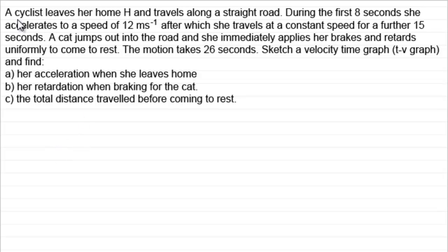What we've got here is a cyclist leaves her home H and travels along a straight road. During the first 8 seconds she accelerates to a speed of 12 meters per second, after which she travels at a constant speed for a further 15 seconds. A cat jumps out into the road.